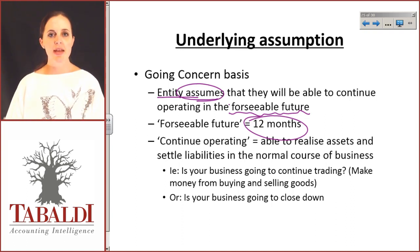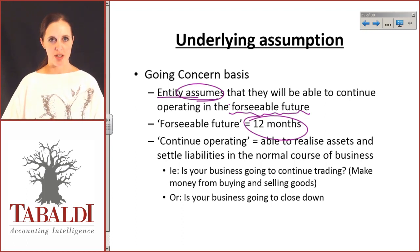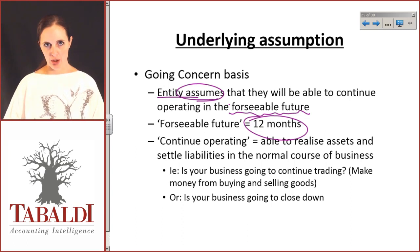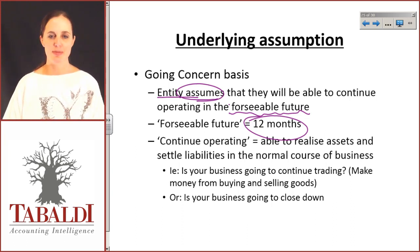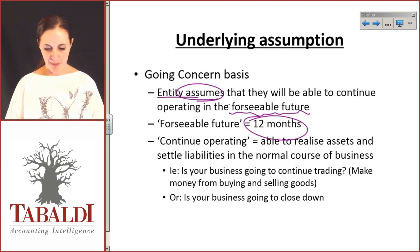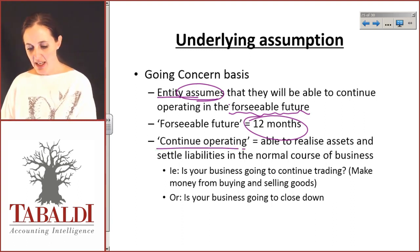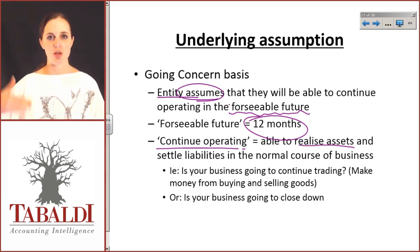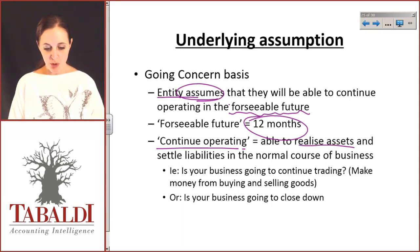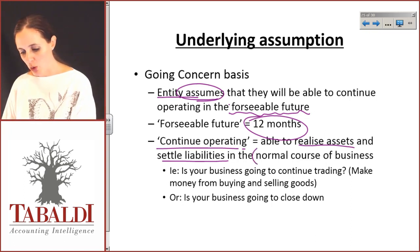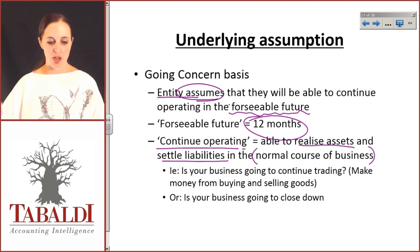The financial statements are drawn up on the assumption that the company is a going concern. If it is not a going concern, then the financial statements must reflect this and the users must be told. Continuing to operate means the ability to realize assets — in other words, your assets will generate income — and to settle liabilities in the normal course of business.